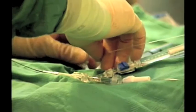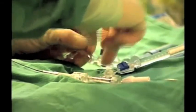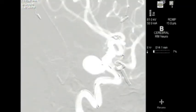The coiling procedure is performed in a state-of-the-art biplanar angio suite. The microcatheter tip is delivered into the aneurysm.